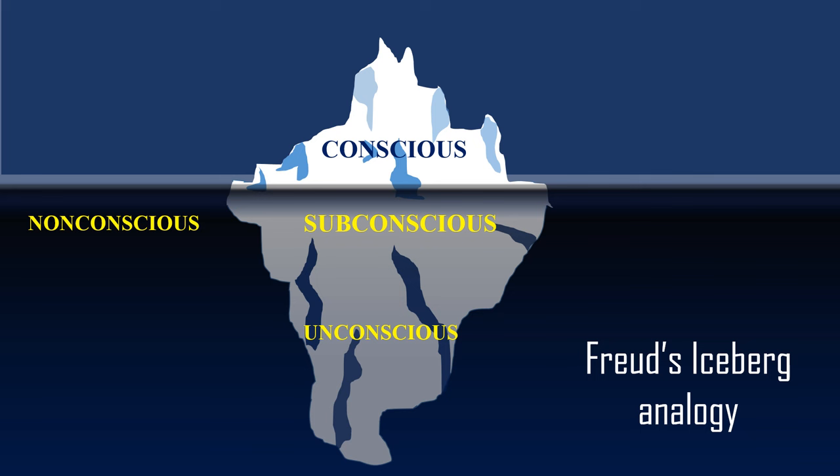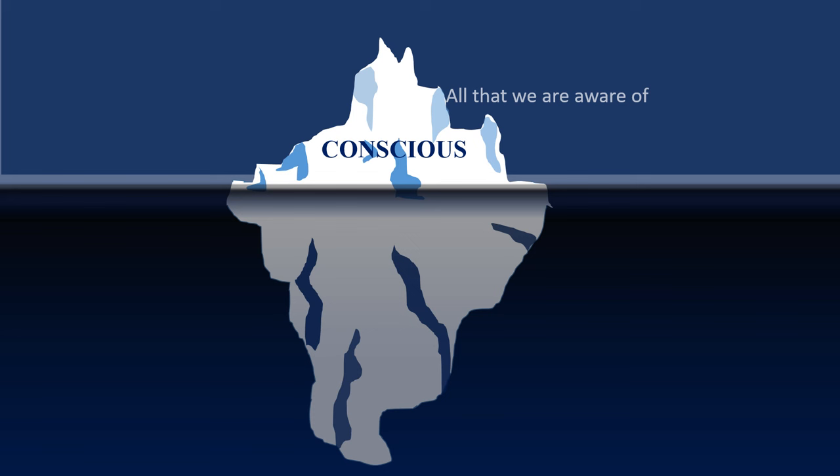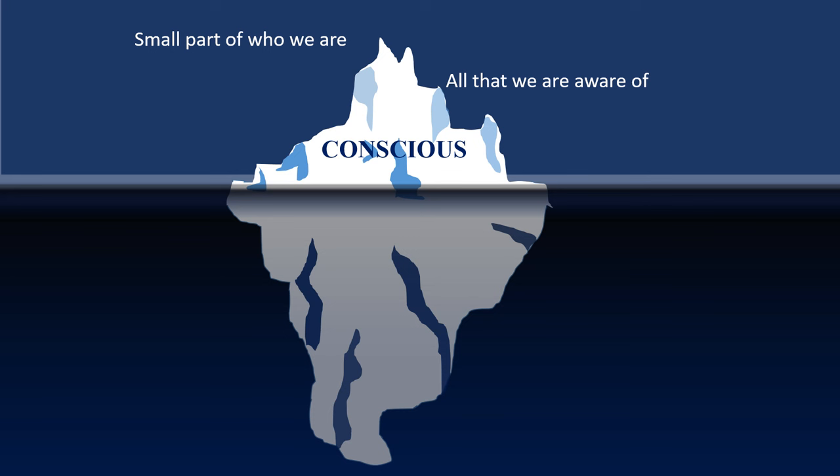The first one is the conscious. Freud said that all that we are aware of is stored in our conscious mind. Our conscious mind only comprises a very small part of who we are, so that in our everyday life we are only aware of a very small part of what makes up our personality. Most of what we are is hidden out of reach. The conscious mind involves all of the things that you are currently aware of and thinking about. It is somewhat akin to short-term memory and is limited in terms of capacity. Your awareness of yourself and the world around you are part of your consciousness.